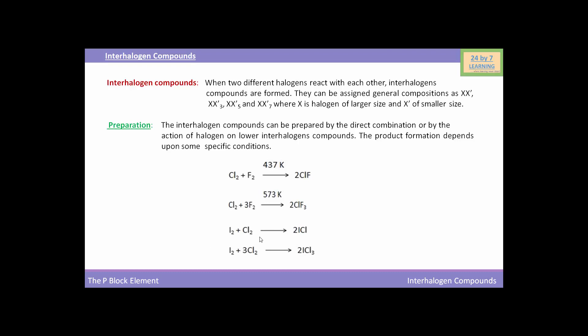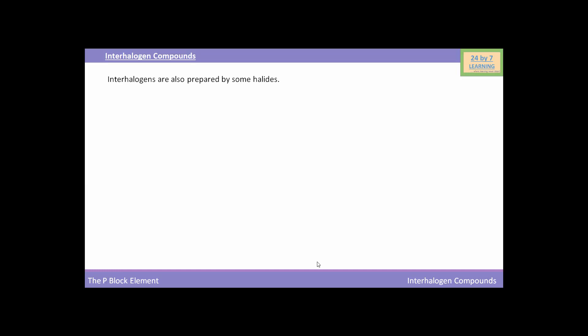When iodine reacts with chlorine, the reaction yields ICl, that is iodine monochloride, which is also an interhalogen compound. When iodine reacts with three molecules of chlorine, the reaction yields ICl₃, that is iodine trichloride.